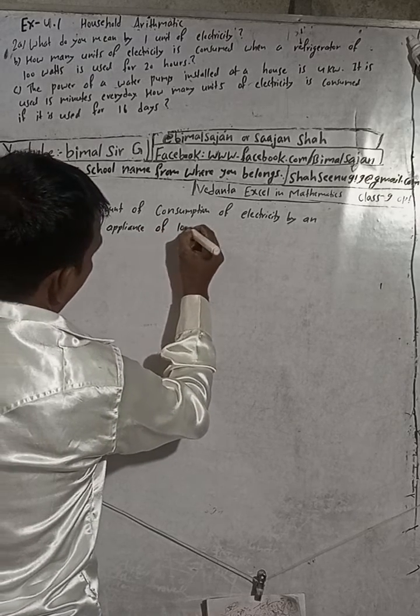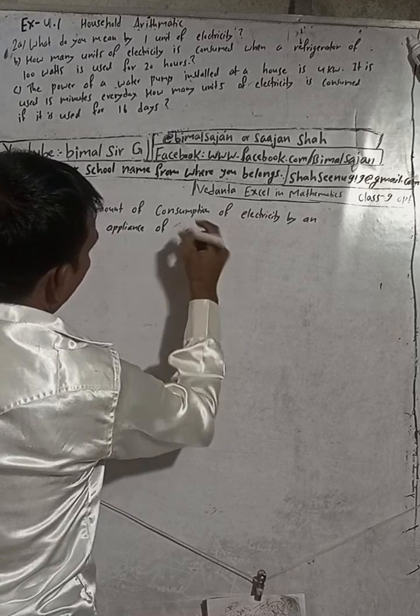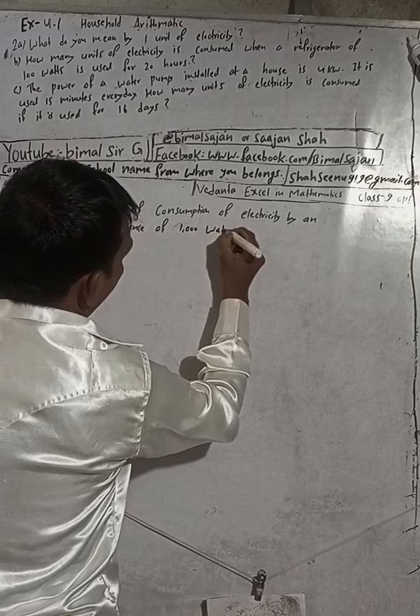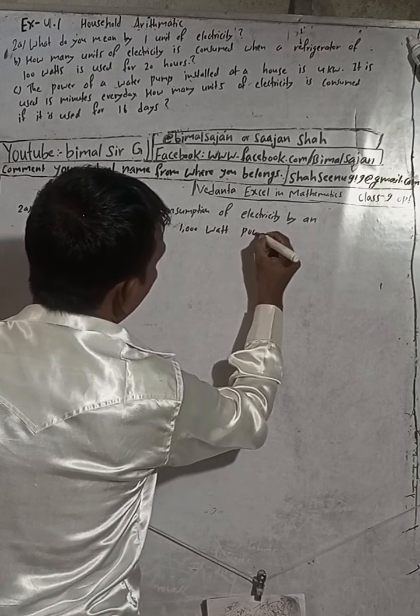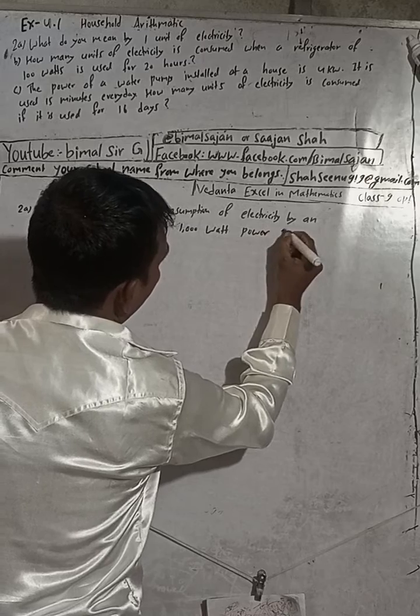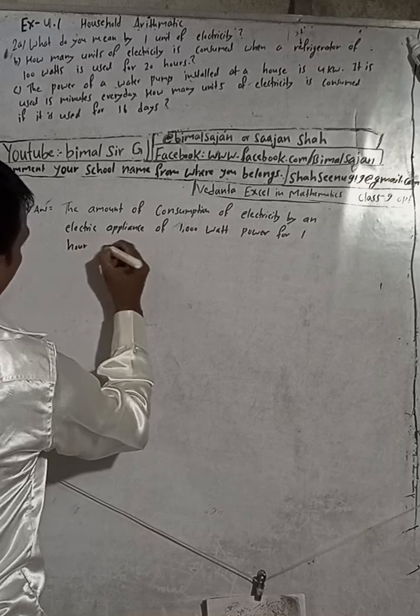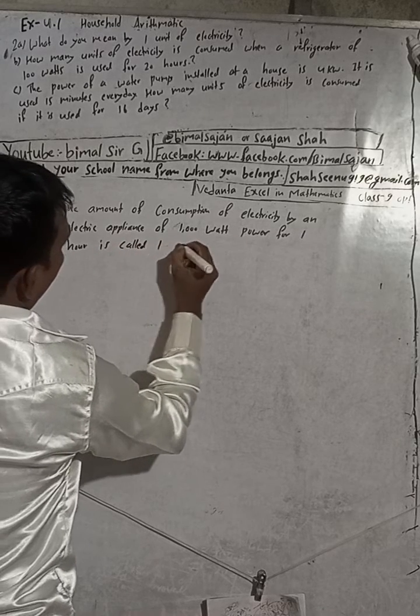of one thousand watt for one hour is called one unit of electricity.